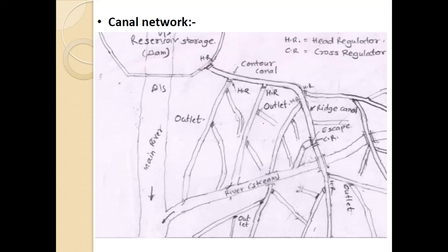This is the canal network. The reservoir, main river, and river stream are shown. These are the contour canals, head regulators, and cross regulators. This is the canal network showing how the canal flows — the ridge canal flows along the ridge and the contour canal flows along the contour. Drain works and outlets are also present. This is how the canal network works.